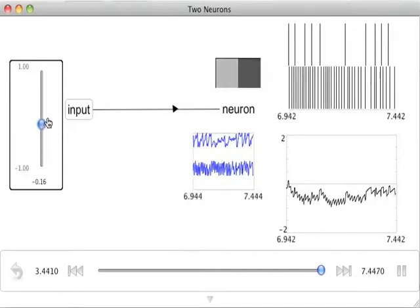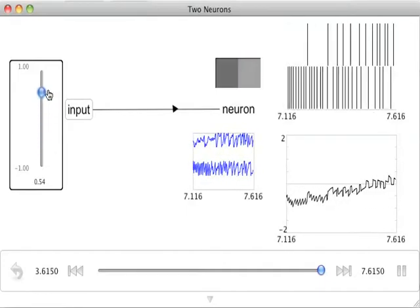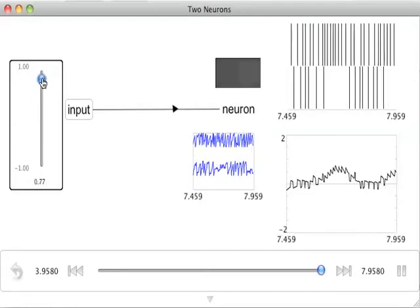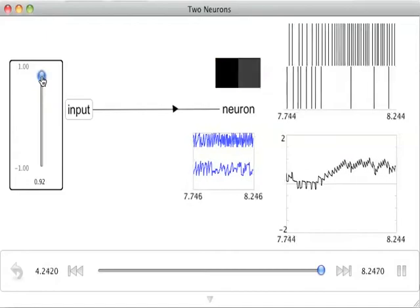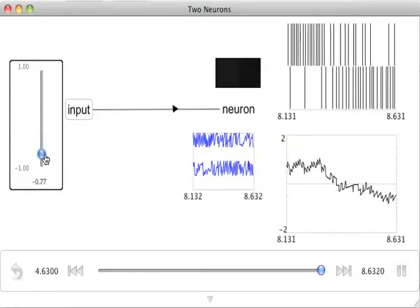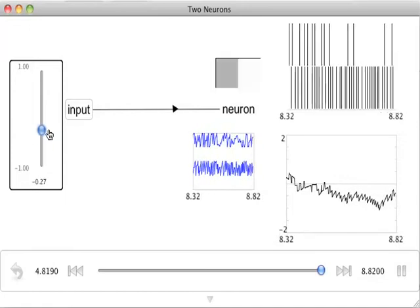In the neural engineering framework, we refer to the preferences of the cells as their encoders. So we would say that the top neuron has a positive encoder because as the input goes up, it is more active. And the bottom cell has a negative encoder because as the input goes down, it becomes more active.